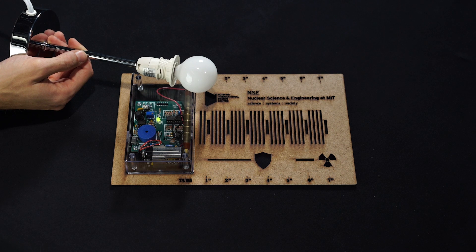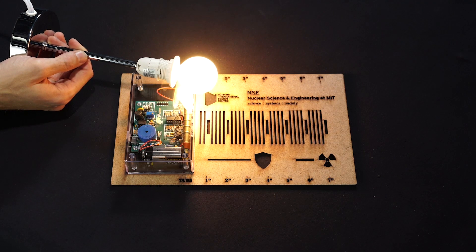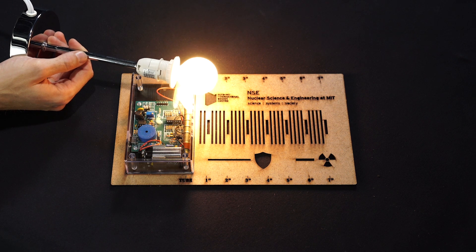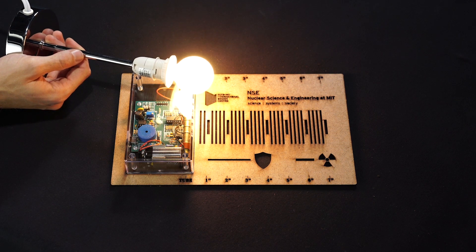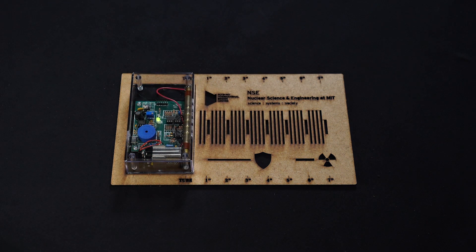Whether the light is off or on, it's about the same number of counts per second. Therefore, while this is a source of radiation, it is not a source of ionizing radiation.